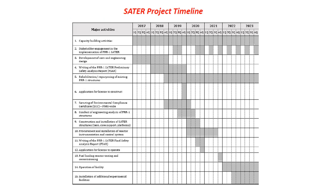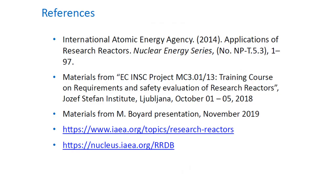The SATURN project timeline aims for commissioning in December 2021, with the facility operational by 2022. These are the references which you can view for further study. Thank you for listening.